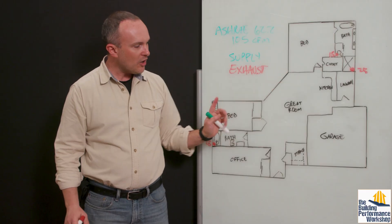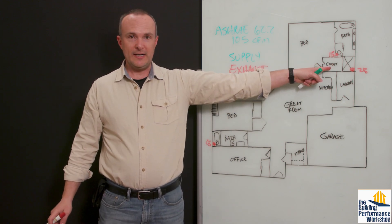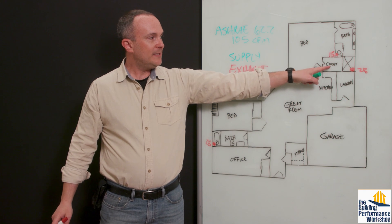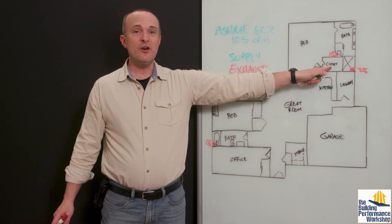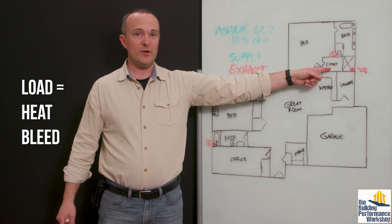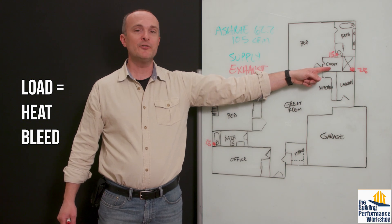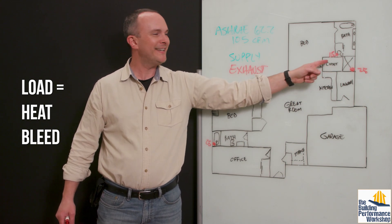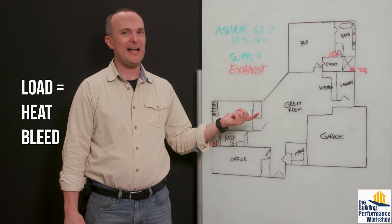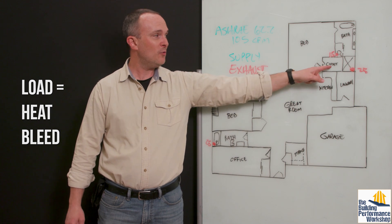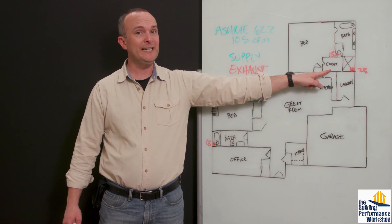So we also have a couple other places that are important to consider. This closet right here, I have described in other videos about this floor plan, has no load. That room has no exterior walls. It has a floor that has no exposed perimeter. It might be under an attic, but it's got no windows in it. And the amount of load that an attic insulation is going to impose on it is not a lot. So it's not going to bleed a lot of heat. Therefore, there will not be a vent to deliver heating and cooling in this closet.